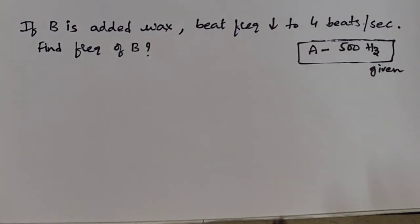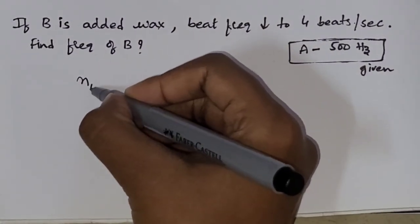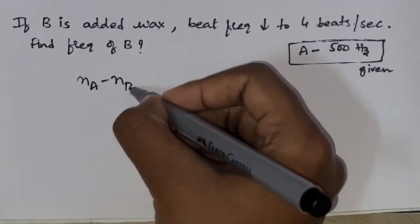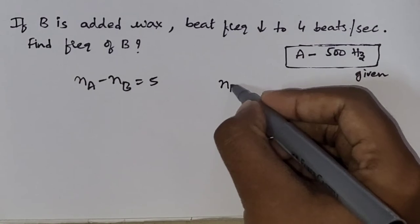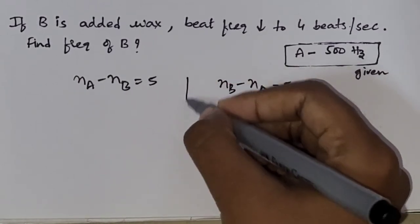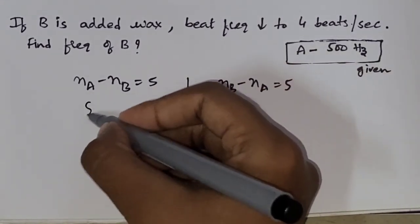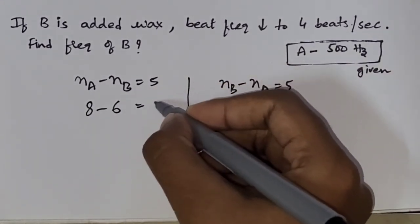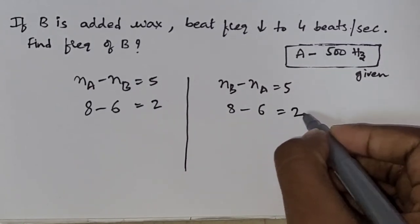So, you have to follow these steps while doing the question. First, write NA minus NB equal to 5. Next, NB minus NA equal to 5. This is the first step. Second step, write 8 minus 6 equal to 2. 8 minus 6 equal to 2.